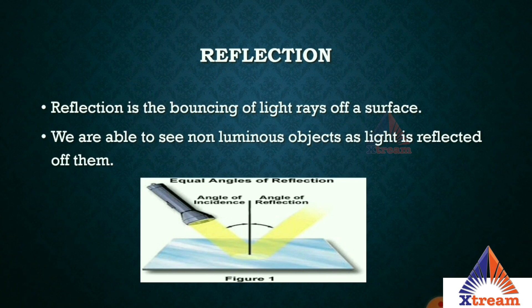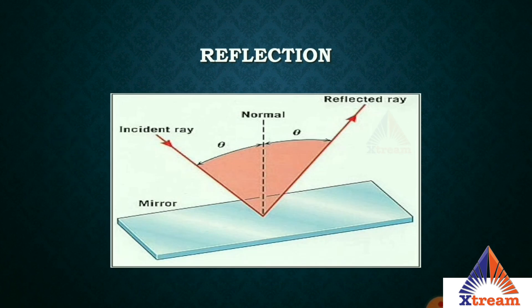We are able to see non-luminous objects because light is reflected off them. When a ray of light approaches a smooth polished surface and bounces back, it is called the reflection of light. The incoming ray is called the incident ray, the ray that bounces back is called the reflected ray, and if a perpendicular is drawn on the reflecting surface, it is called the normal. Reflection involves two rays: an incoming or incident ray and an outgoing or reflected ray.